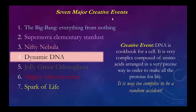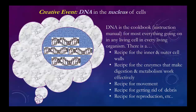Here's our list of the seven major creative events — we're at number four: the dynamic DNA. DNA is the cookbook for every cell. It is very complex, composed of amino acids that had to be formed and arranged in a very precise way to make all the different proteins we need to live. It just can't occur as an accidental random event. The nucleus contains this complex DNA with a sugar ribbon on the outside and amino acids jumping between them. They break into chromosomes and genes, and the DNA gets longer as you develop more structure — coming out of the primordial soup by random chance is impossible.